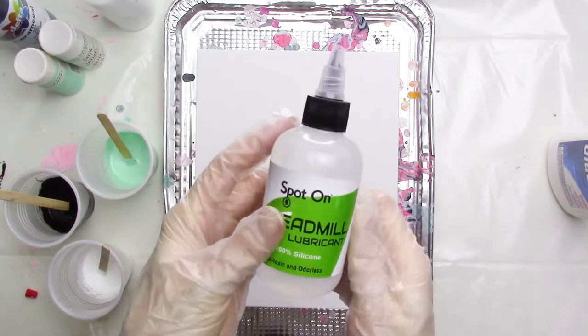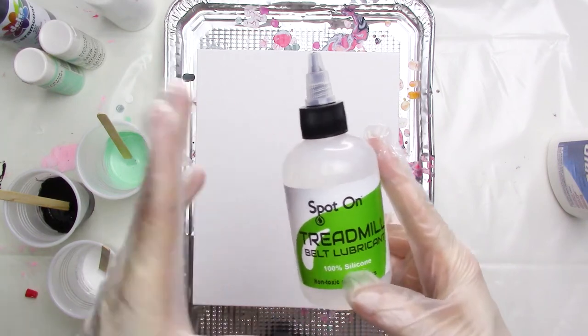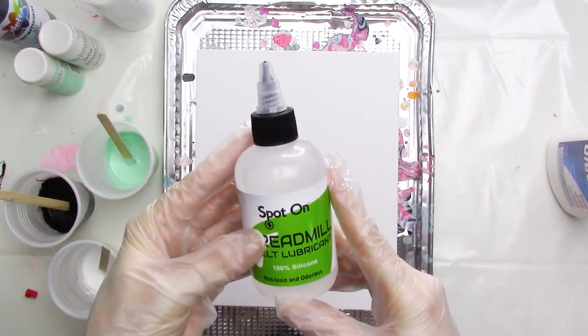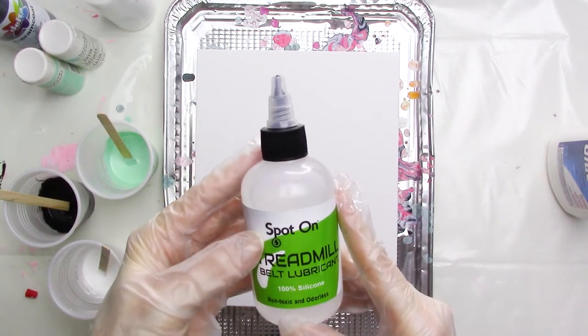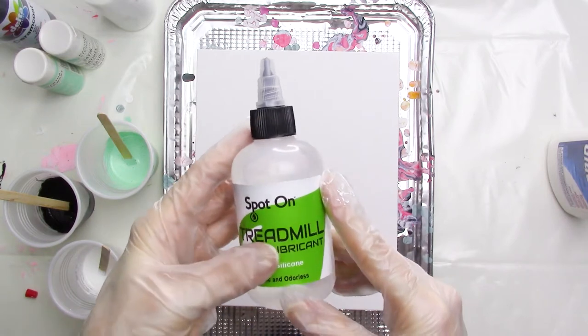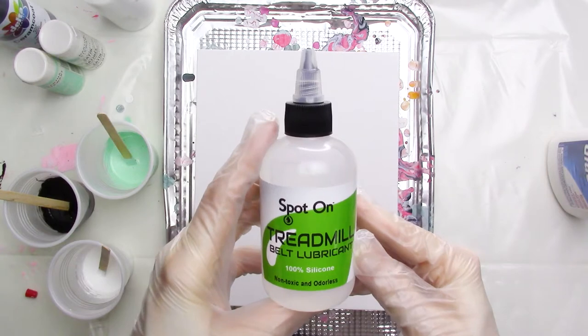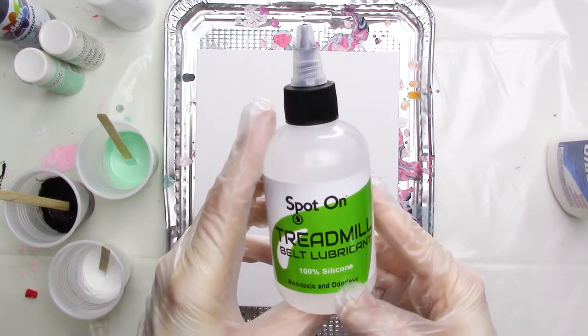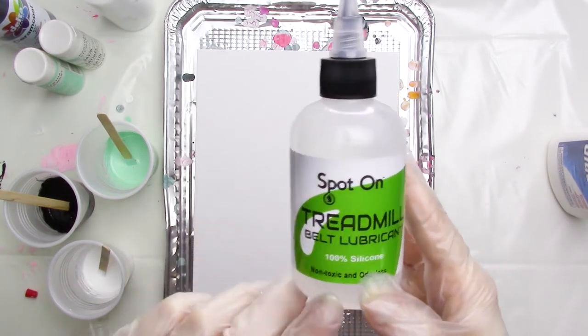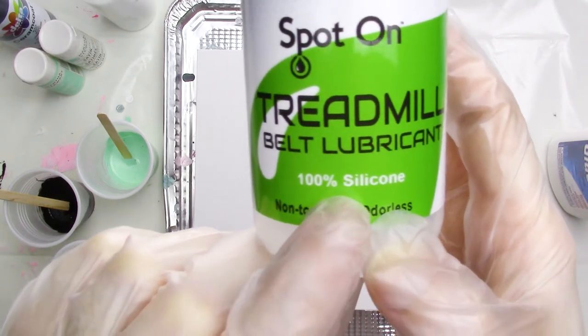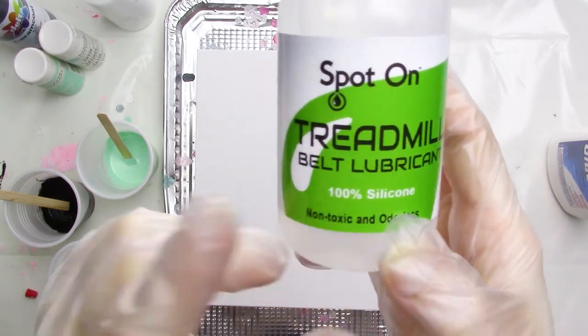For the silicone oil, I'm using this treadmill belt lubricant that I found on Amazon.com. There are a lot of different silicone oils available on Amazon, and this seemed to be one of the more popular ones and wasn't too expensive. It's 100% silicone, which is exactly what we want because other additives and ingredients could affect the results of our painting. So if you can, go with 100% silicone.